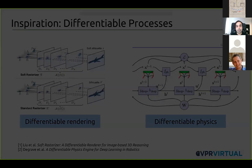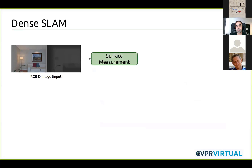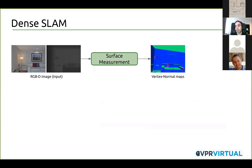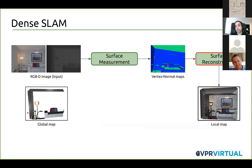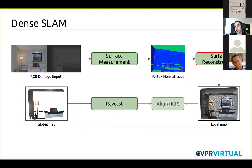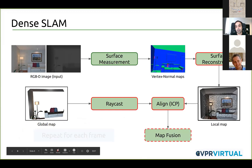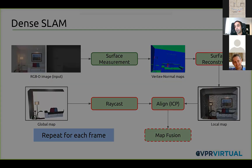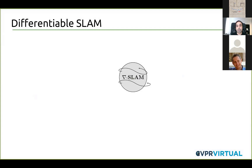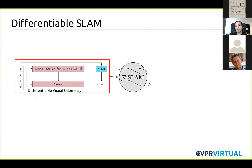If you look at the traditional dense SLAM system, there is an RGB-D image that is an input, and from this input image we extract surface measurements in the form of vertex normal maps. The underlying geometry is then reconstructed in the local frame, giving your local map. We assume a global map initialized to blank — just empty points. As time progresses, you have a persistent estimate of a global map, which you raycast and then align with the local map to perform fusion and update the global map, repeated each frame. Several processes shown in red boxes are not differentiable, so with the idea of making all of them differentiable, we propose GradSLAM, which comprises several differentiable SLAM modules: differentiable visual odometry, differentiable nonlinear least squares, dense mapping, and ray differentials.